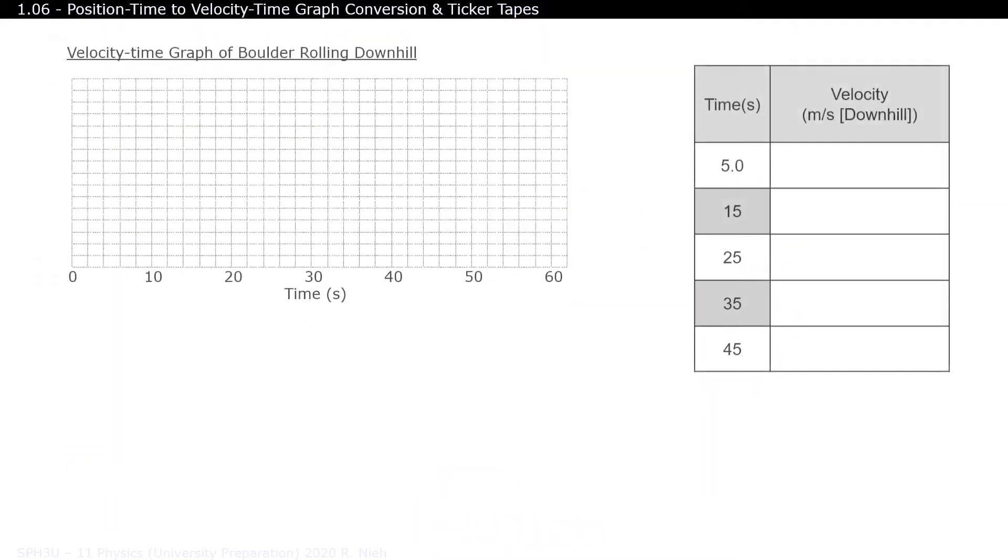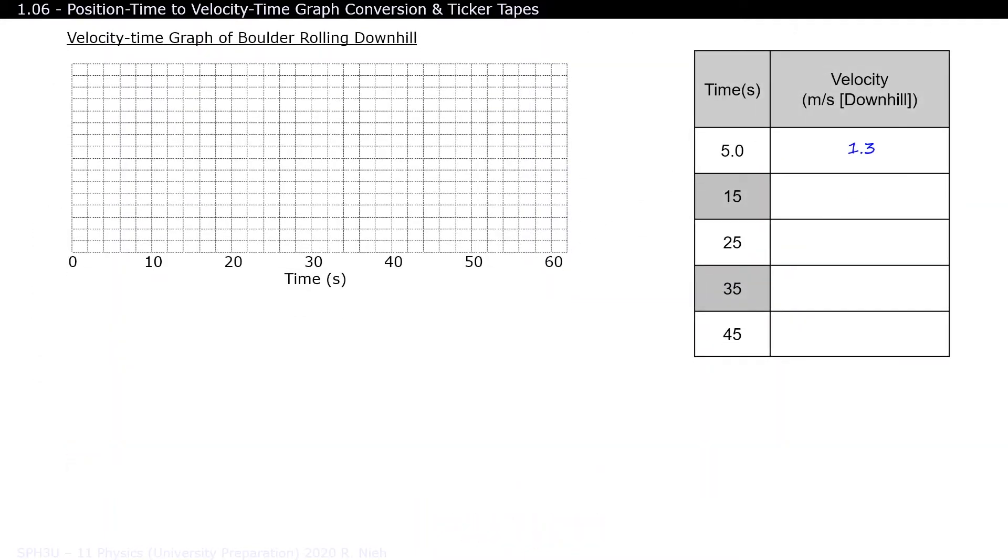After measuring the slopes of the tangents, we then transferred the instantaneous velocity values onto the next table and plotted the corresponding velocity time graph. Since we had multiple data points, we could reduce our procedural error by averaging our data.